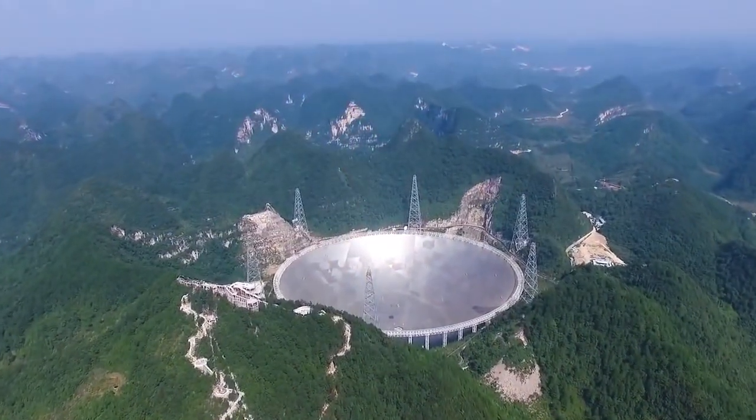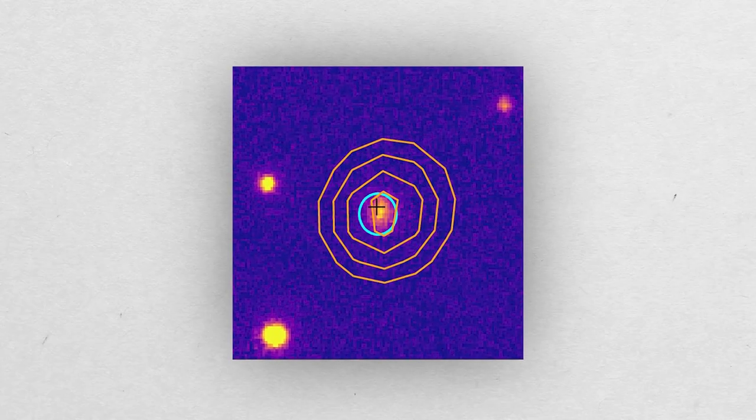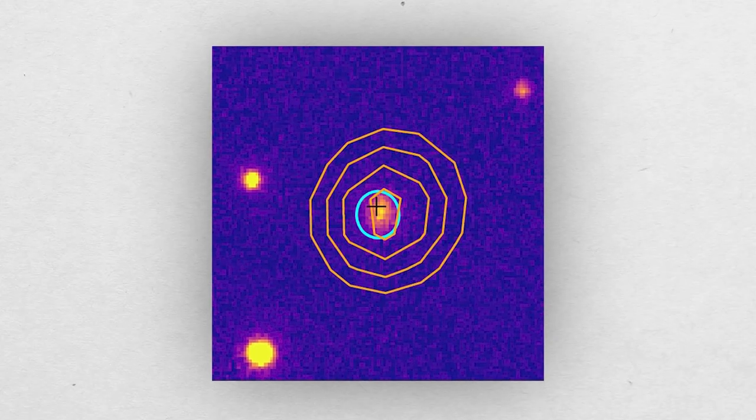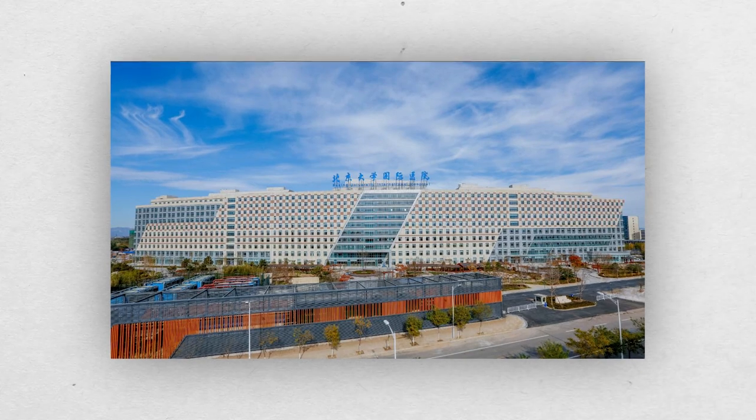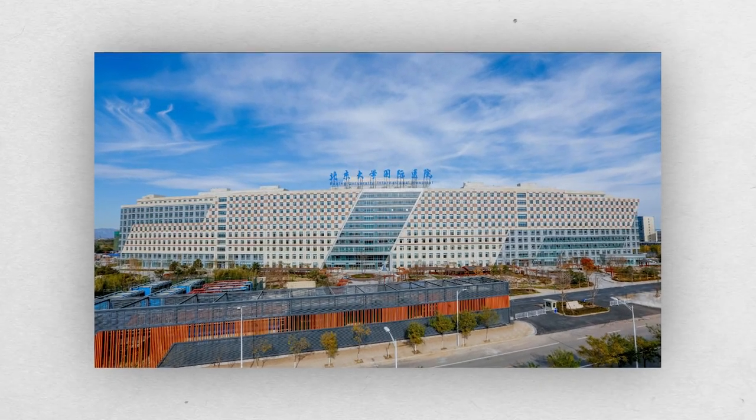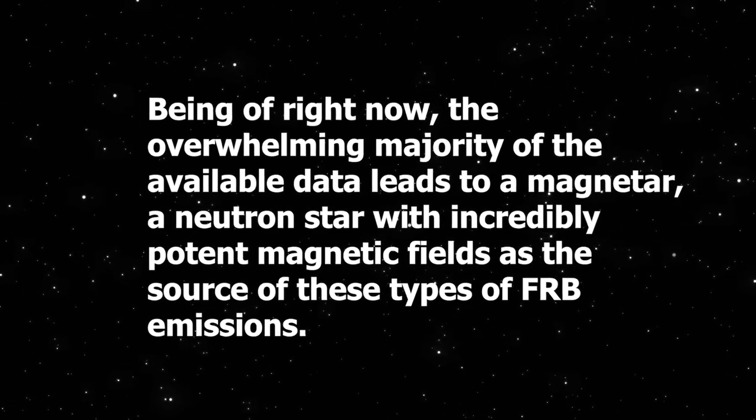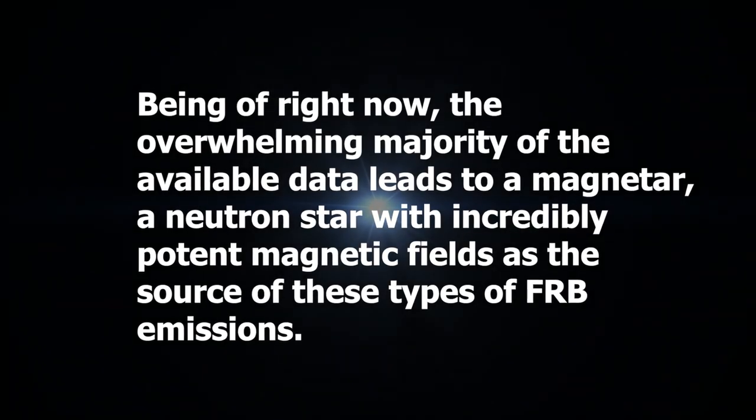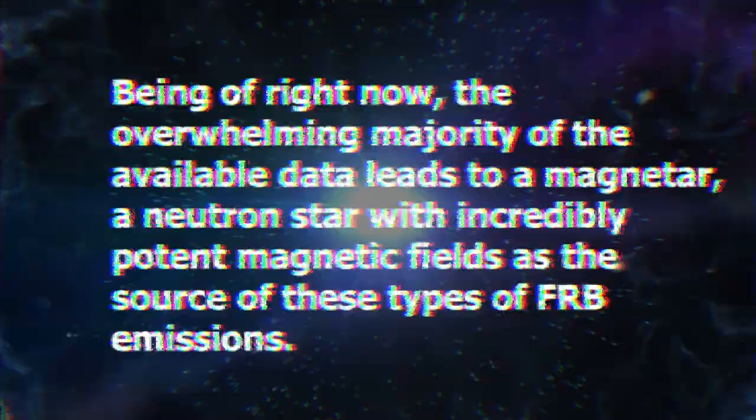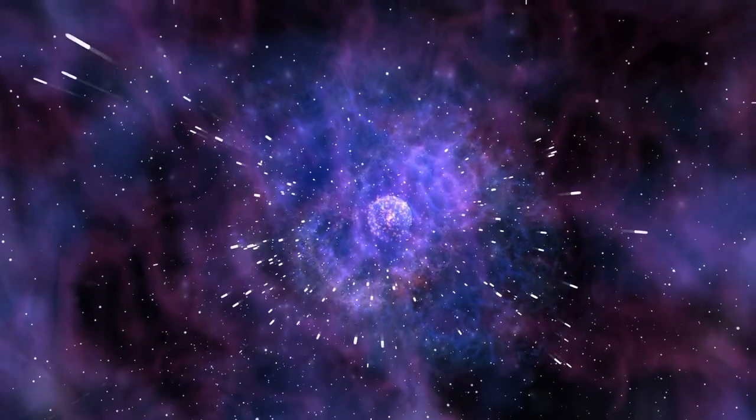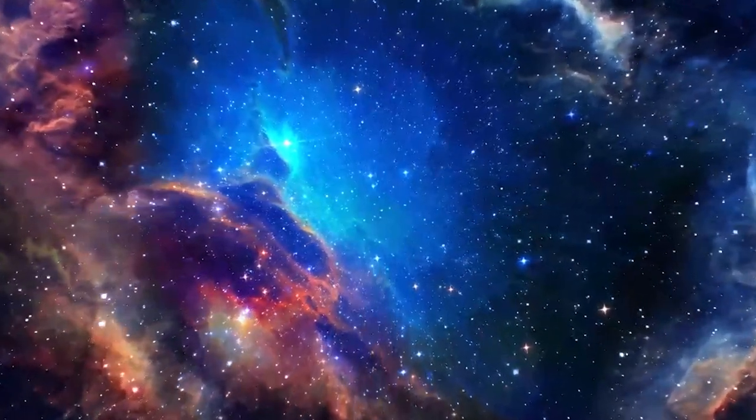The 500-meter Aperture Spherical Radio Telescope in China was used to discover the object, which has the designation FRB-2020-1124A. Astronomer Heng Zhu of Peking University in China is the lead author of a recent publication that describes the item. The overwhelming majority of the available data leads to a magnetar—a neutron star with incredibly potent magnetic fields—as the source of these types of FRB emissions. It appears to be a unique specimen if FRB-2020-1124A is in fact a member of the untamed kingdom of cosmic beasts.